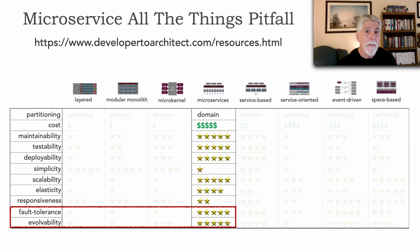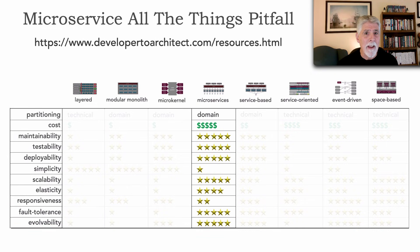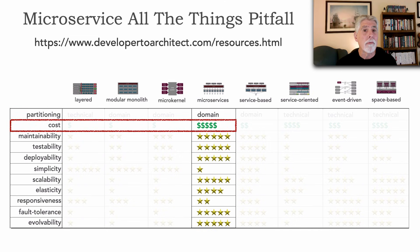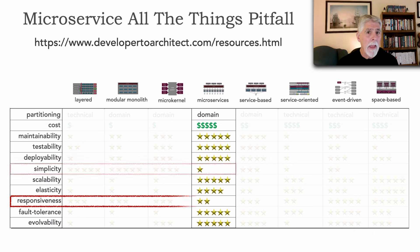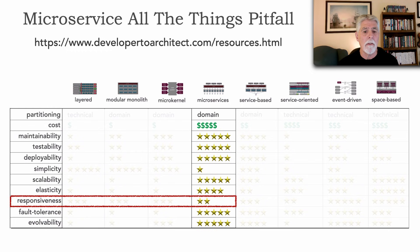But every time we look at the superpowers we also have to look at the bad parts — the kryptonite. The first is cost. This is an extremely expensive architecture style, not only to create but also to maintain, including the ongoing costs of infrastructure. It is also an extremely complex architecture and can possibly have fairly low responsiveness due to all the latency of communication between the services.